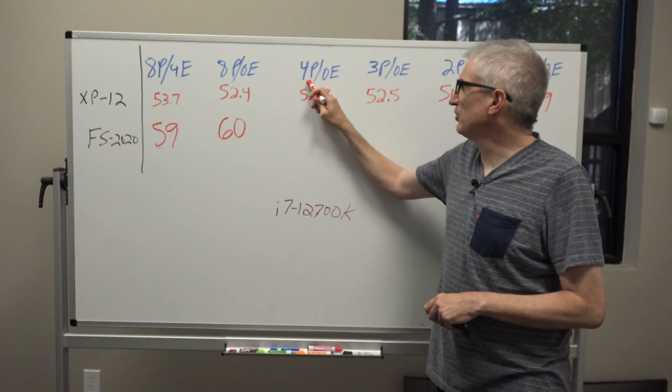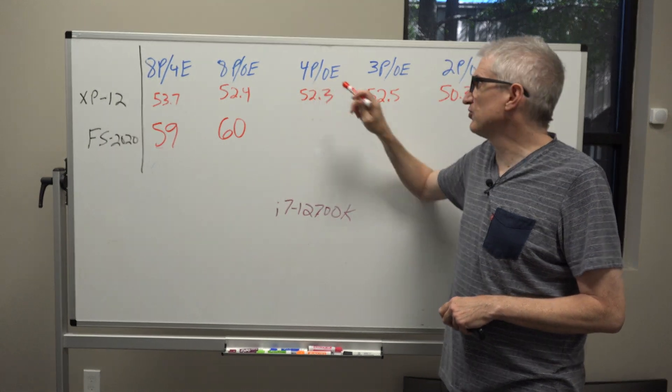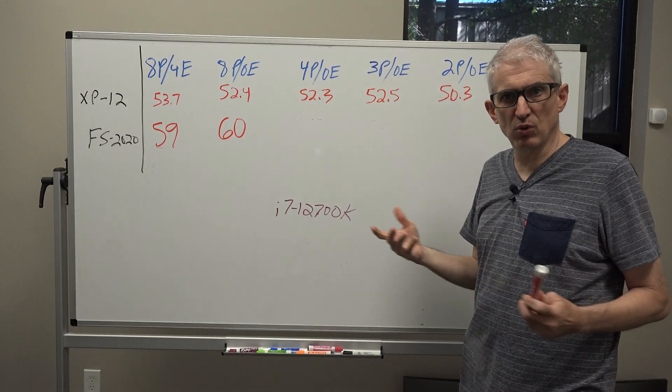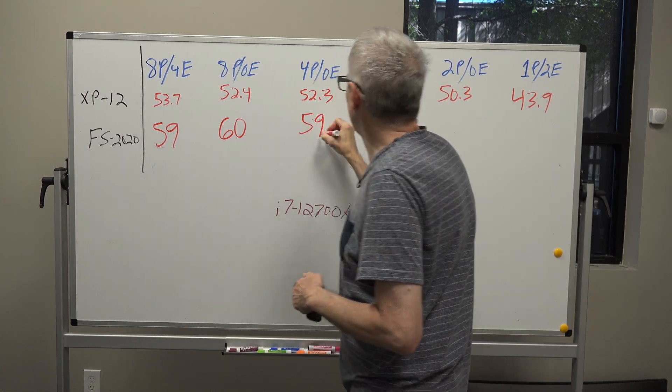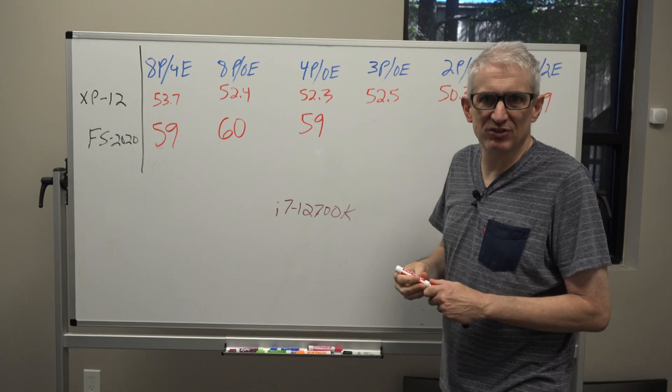So next I took us down to four performance cores and no efficiency cores, so quad core, and we got 59 again. Essentially no change.